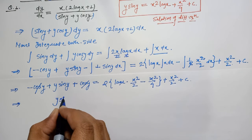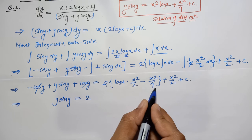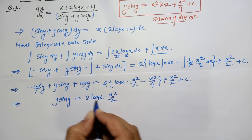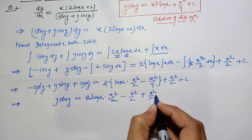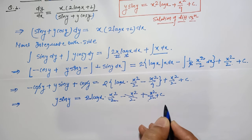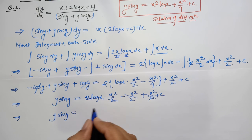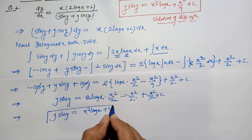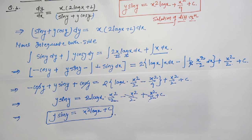On the left-hand side, −cos y cancels with +cos y, leaving y sin y. On the right, the 2 cancels with the 1/2, and −x²/2 and +x²/2 cancel each other out. So the final solution is y sin y = x² log x + c.